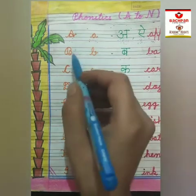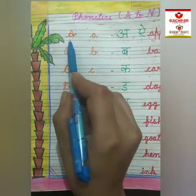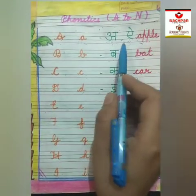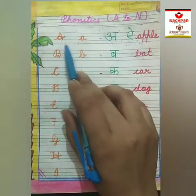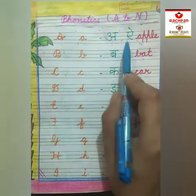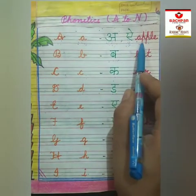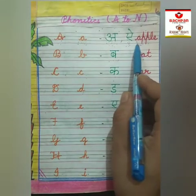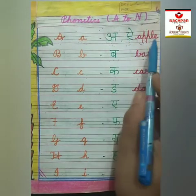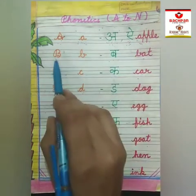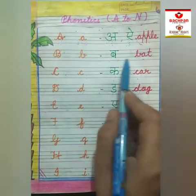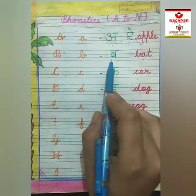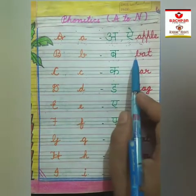Let's start. A says A — apple. A says A — apple. Which sound is coming from apple? A sound, long sound, is coming. B says B — bat. B says B — bat. Which sound is coming from bat? B sound is coming.